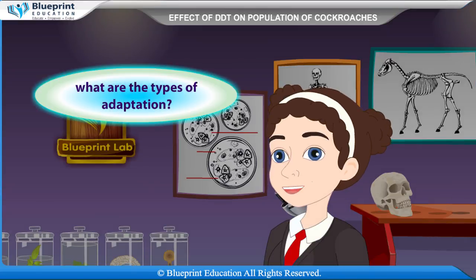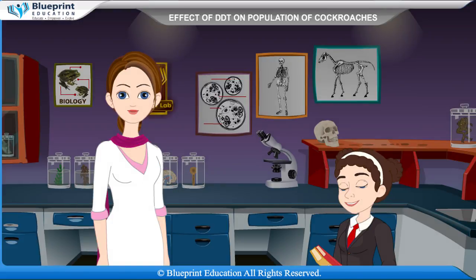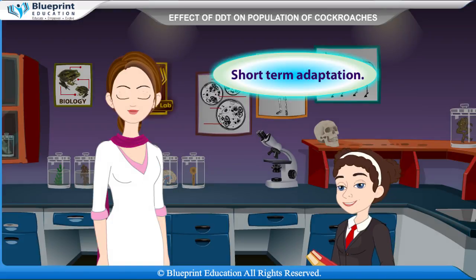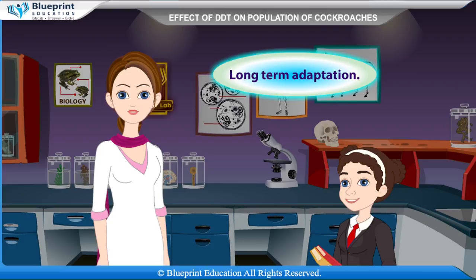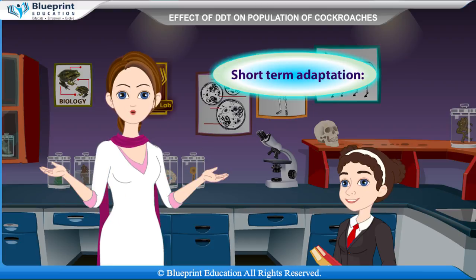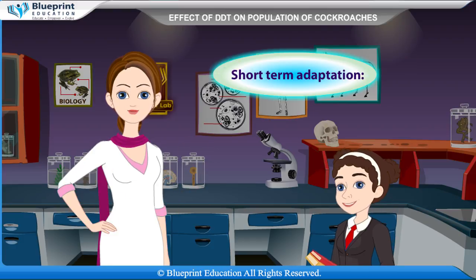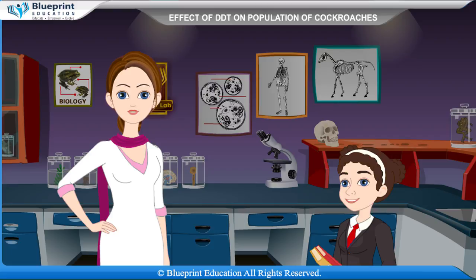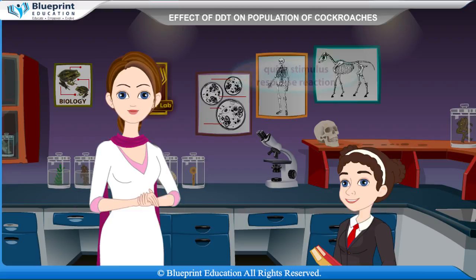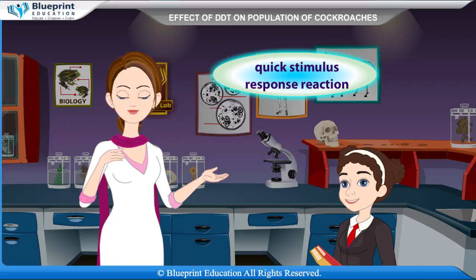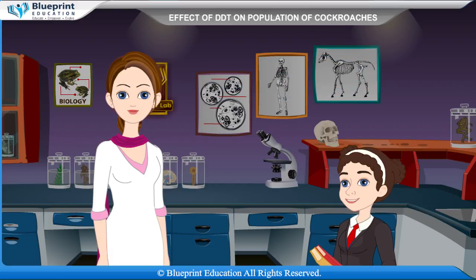Student: Madam, what are the types of adaptation? Teacher: They are classified into two groups — short-term adaptation and long-term adaptation. Short-term adaptation is when the response develops quickly and disappears rapidly; it is called a quick stimulus-response reaction.